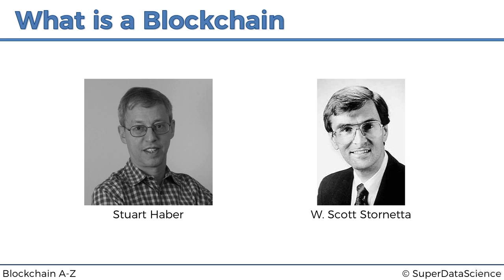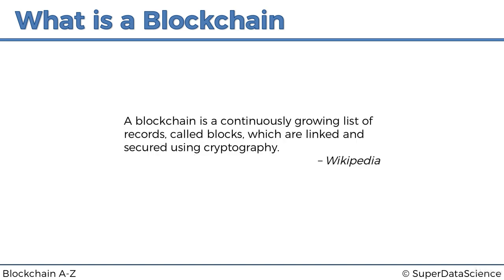The way Wikipedia identifies a blockchain is: a blockchain is a continuously growing list of records called blocks, which are linked and secured using cryptography. This is a very general definition — there's much more to a blockchain as we'll see — but this is already a place for us to start.